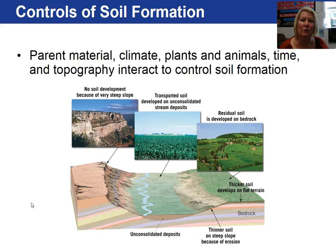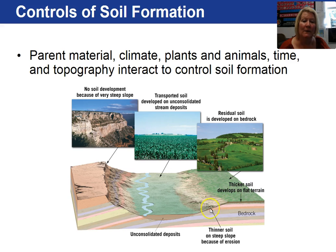This figure shows some of the controls of soil formation. If you have a steep cliff, soil tends not to form because there are no plants to hold it in place and gravity simply washes it down. In a floodplain region, soil tends to accumulate in thick deposits. In a gently undulating topography, you can also develop thicker soils. If the soil is sitting directly on top of bedrock from which it formed, we call it a residual soil. If the soil is on top of unconsolidated deposits such as those on a floodplain, we call them transported soils.